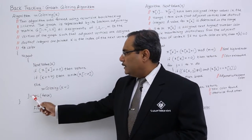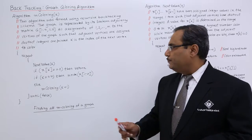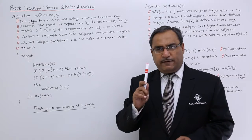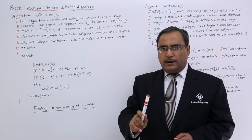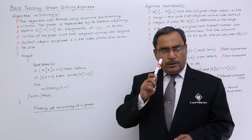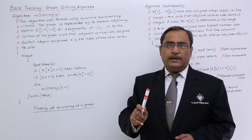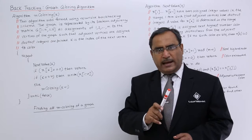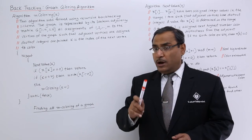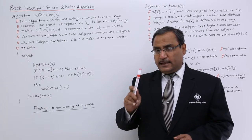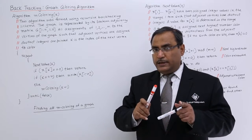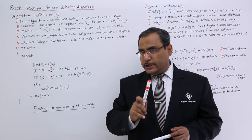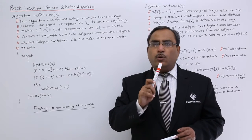Now, repeat until false — so it is going for an infinite loop. next_value(k) is a function which will provide the color for the k-th node. If it can provide a color, it will place that value at the k-th location of the array x. x is a global array with n locations; x[1] contains the color value or color number of node 1.